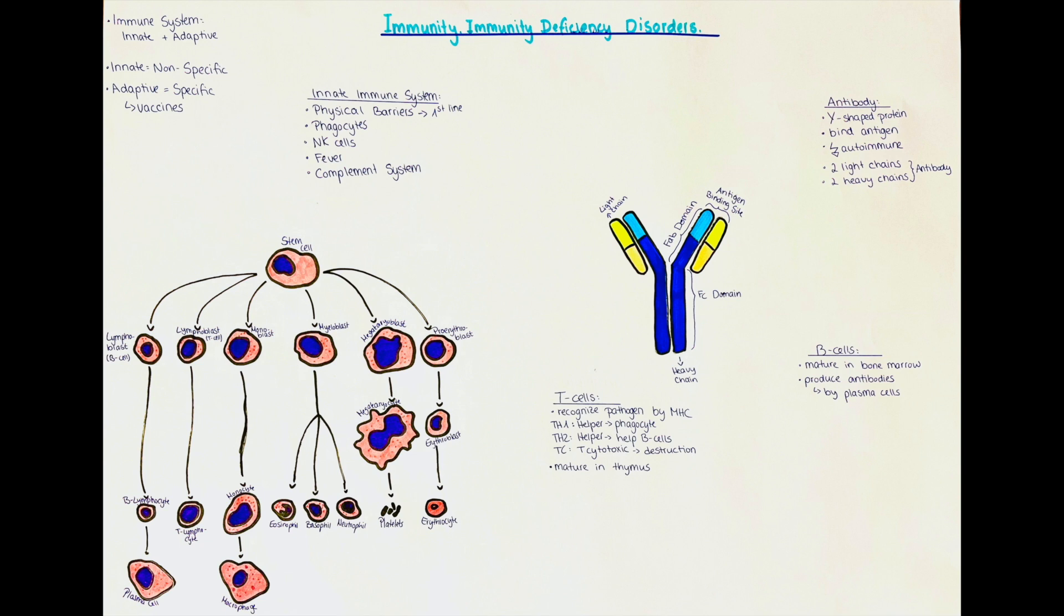Neutrophils are one of the first cells to show up at an area of infection or wound site. Now for completeness sake, let's look back at the hematopoiesis picture and look at thrombocytes. These are also known as platelets.